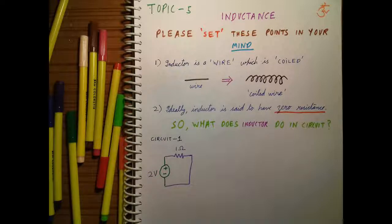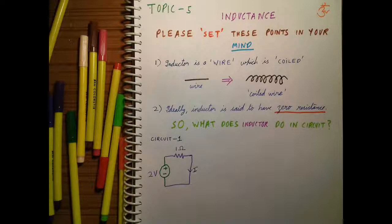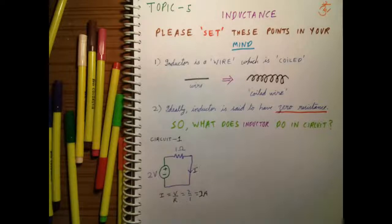We connect a 1 ohm resistor across the 2 volt source. As soon as we connect this, the current I flows through it. This current I is measured using an ammeter, and instantly the ammeter shows 2 amperes. You can verify it using Ohm's law as shown on the screen. Remember: instantly it shows 2 amperes and continues to show 2 amperes.